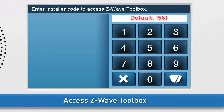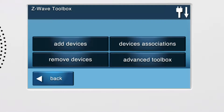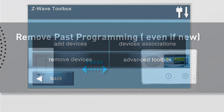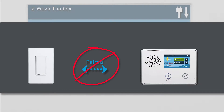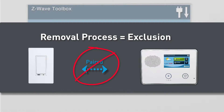The default installer code for the GC2 is 1, 5, 6, 1. You are now in the Z-Wave Toolbox. Z-Wave devices may need to have past programming removed before they can be added to a panel, even if they are new. We do this by performing the removal process, which is also known as exclusion.